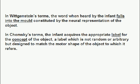In Wittgenstein's terms, coming back to the original reference, the word when heard by the infant falls into the mold constituted by the neural representation of the object. In Chomsky's terms, the infant acquires the appropriate label for the concept of the object — a label which is not random or arbitrary, but designed to match the motor shape of the object to which it refers. The label is a neural structure.